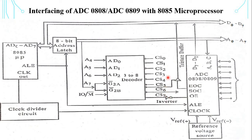If the output buffer is enabled, the digital data can be read from the ADC. The output clock signal of the 8085 microprocessor is divided by a suitable clock divider circuit and used as the clock signal for ADC operation. A separate voltage source has to be provided to give accurate reference voltage levels. The end of conversion signal EOC is connected to data bus line D0 through a tri-state buffer.